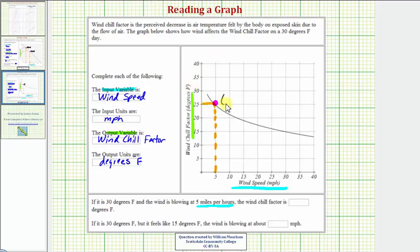As an ordered pair, this would be the point five comma 25, where the input is always the first coordinate, and the output is always the second coordinate. So, if it's 30 degrees Fahrenheit, and the wind is blowing at five miles per hour, the windchill factor is 25 degrees Fahrenheit.